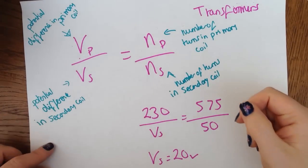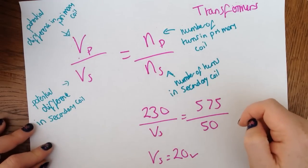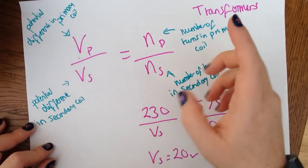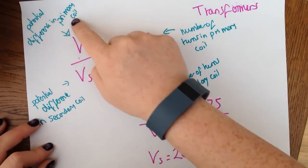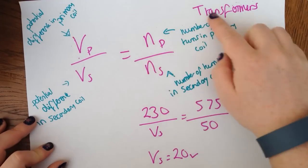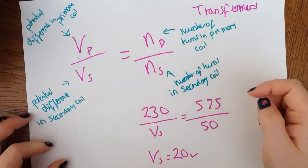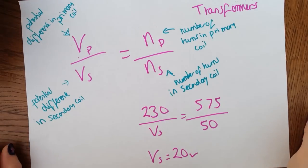The second equation that we can use is potential difference in the primary coil divided by potential difference in the secondary coil is equal to the number of turns in the primary coil divided by the number of turns in the secondary coil. So again, plug our numbers in and don't forget to give our units.